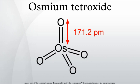Osmylation: OsO4 can be stored in the form of osmylate, a golden crystalline solid which is OsO4 complexed with hexamine. In this form, it does not emit toxic fumes. Osmylate can be dissolved in tetrahydrofuran and diluted in an aqueous buffer solution to make a dilute working solution of OsO4.